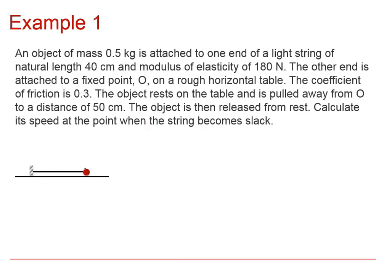So we're going to have a look at an example now. We've got an object here of mass 0.5 kilograms attached to one end of a light string with natural length 0.4 meters, modulus of elasticity 180 newtons. And the other end is attached to this fixed point O. It's on a rough horizontal table, so this is different to our previous example. This one's got a rough table, so we're going to need to take friction into account. Mu is 0.3 and it's pulled away from O to a distance of 50 centimeters. So it's extended by 0.1 meters. We're then going to release the object from rest and calculate the speed when it becomes slack.